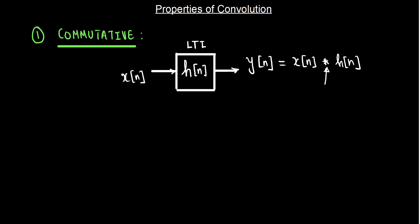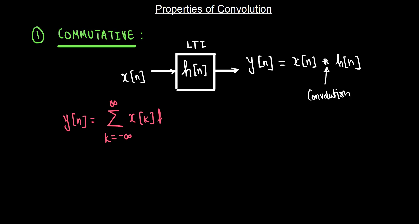The star here represents a shorthand notation for convolution. Assuming this is an LTI system, the output is the convolution sum of the impulse response of the system and the input. The equation of convolution in the discrete case is: y of n equals summation over k from minus infinity to infinity of x of k times h of n minus k.